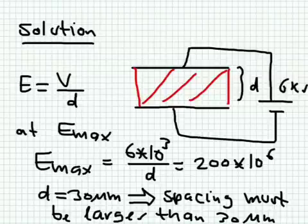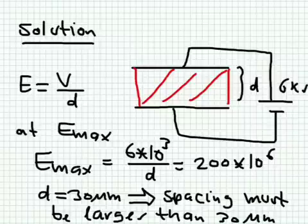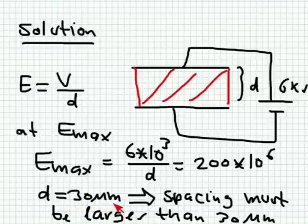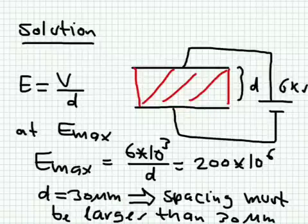We know the voltage is 6 kilovolts and the maximum electric field is 200 megavolts per meter. Setting E = V/d and solving for d, we get d equal to 30 micrometers. If the separation is below 30 micrometers, the electric field will exceed 200 MV/m and the material will break down. So the spacing between the two blades must be greater than 30 micrometers to keep the electric field below the maximum allowed value.